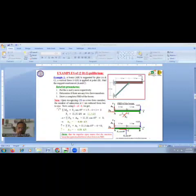So at A, a vertical force of four kilonewtons is applied at point B, and you have to find the support reactions at A and C. Now I am drawing the free body diagram of the beam.